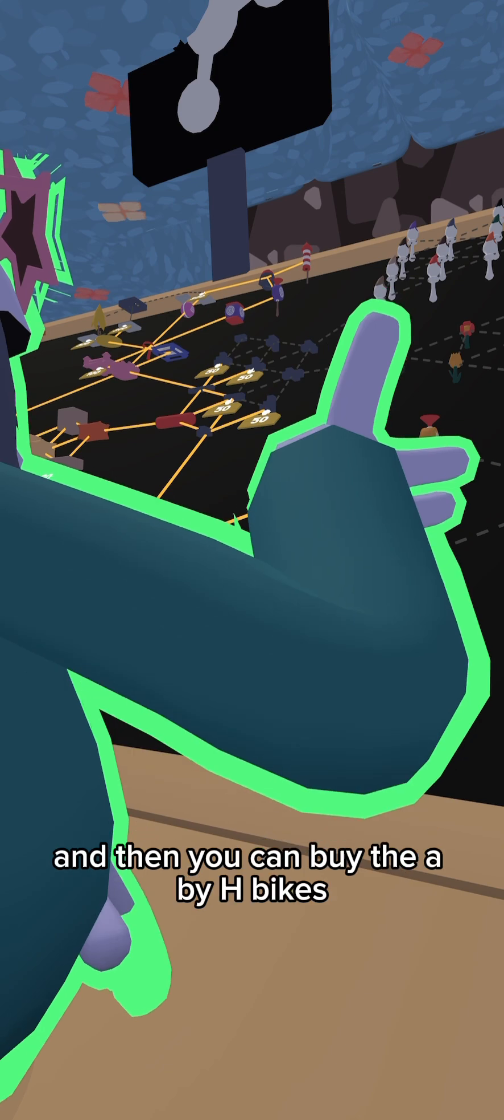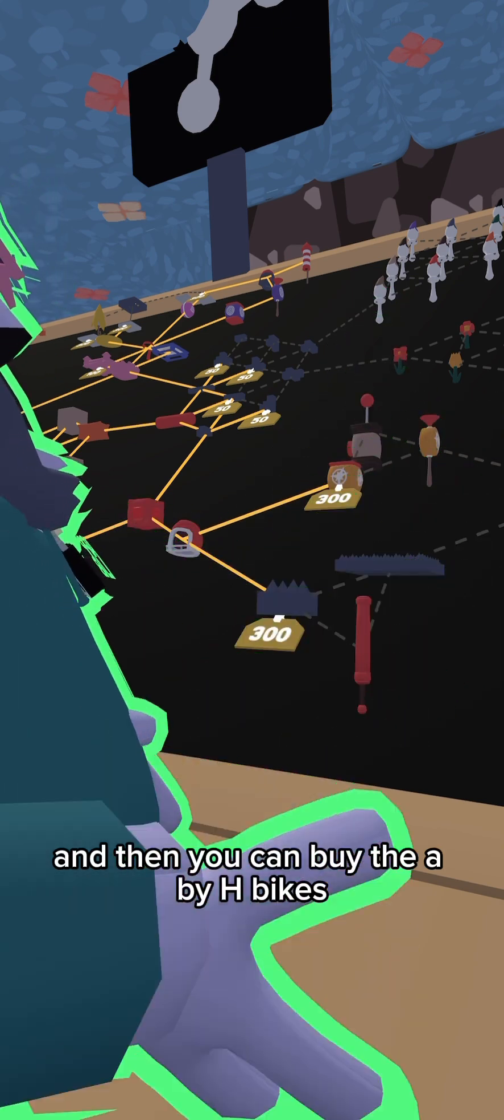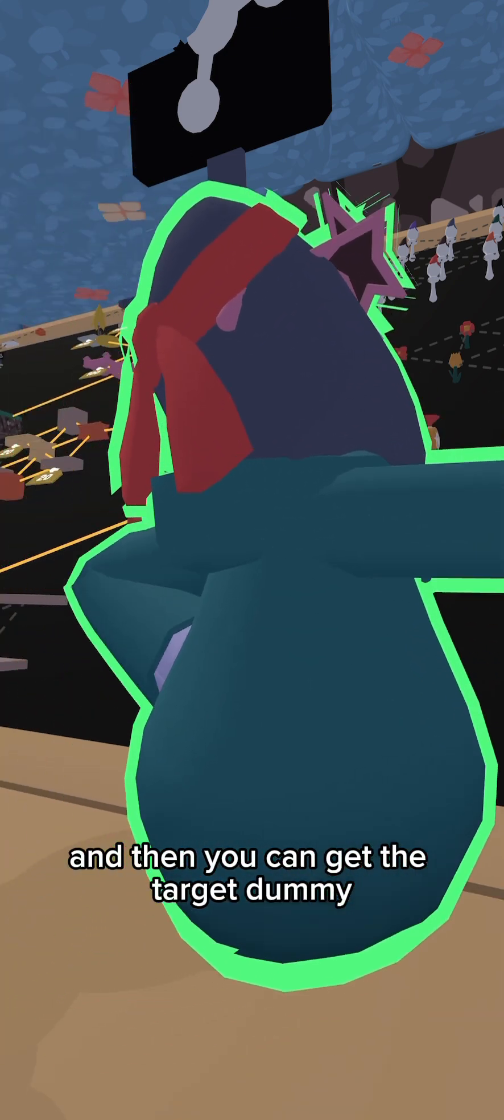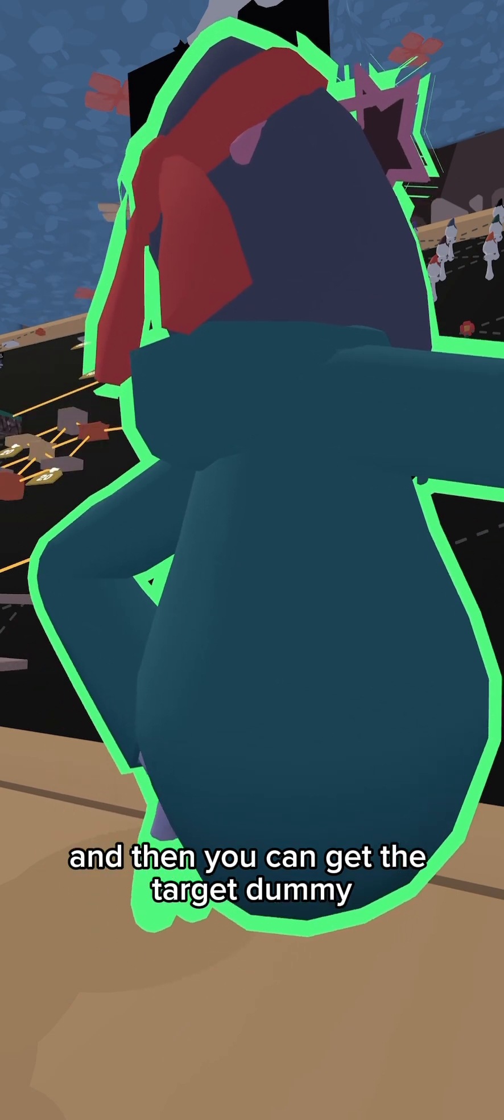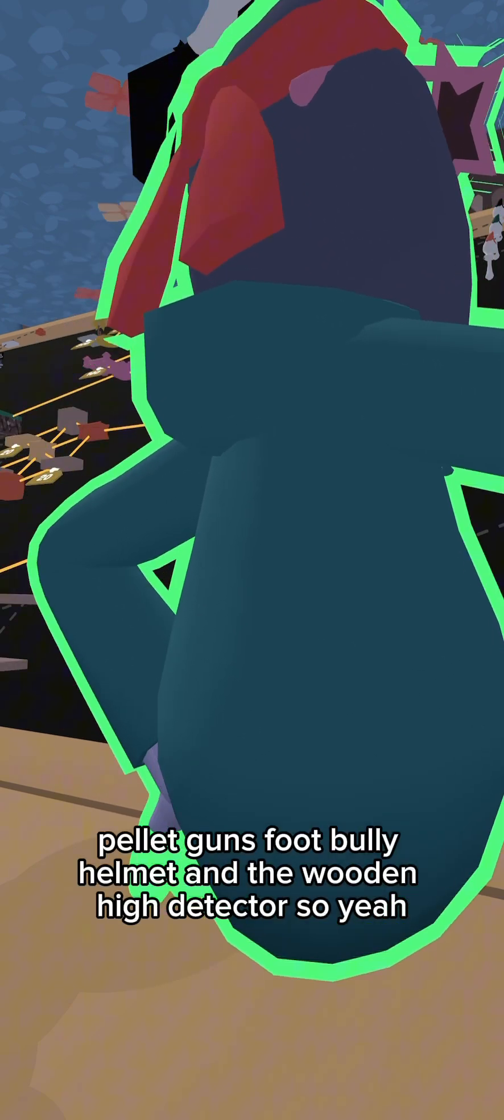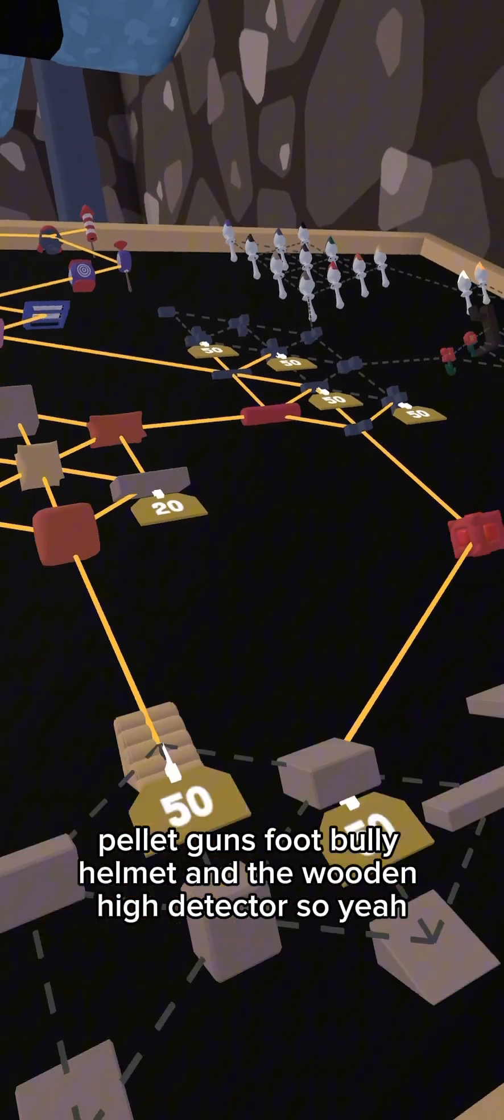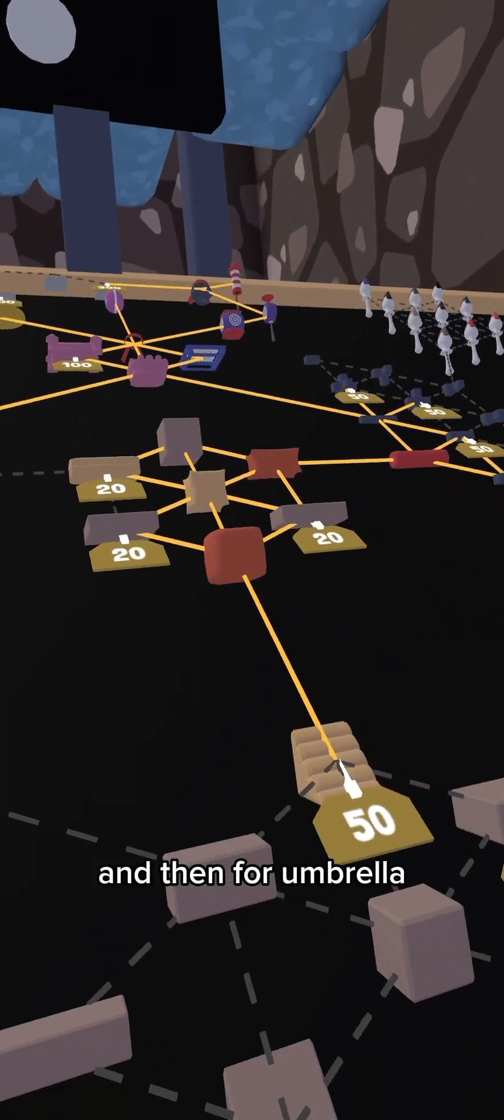And then once you get that, you can buy the eight by eight spikes, and then you can get the target dummy, pellet gun, foot bully helmet, and the wooden line detector.